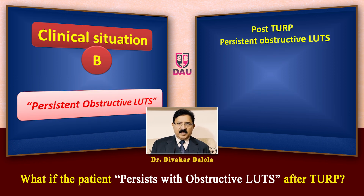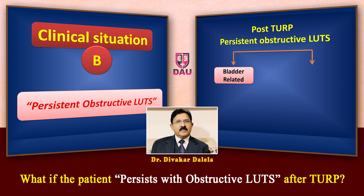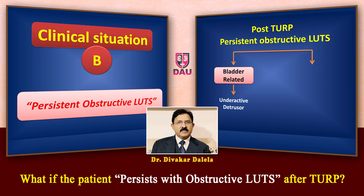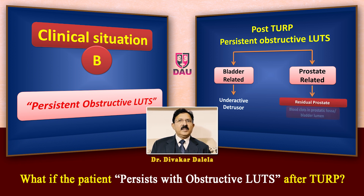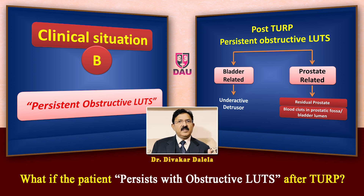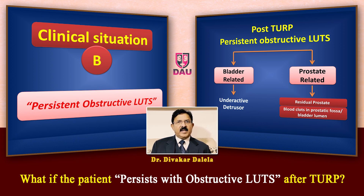Why this happens is important to understand. One group of factors can be bladder-related, where the dominant reason is underactivity of the detrusor muscle — a weak detrusor muscle. The second reason is related to the prostate, where either there is some degree of residual prostate, or the patient has blood clots in the prostatic fossa as well as in the lumen of the urinary bladder, which are obstructing. In some patients you have both, so management becomes a little more tricky. But for the sake of understanding, let us study them separately.